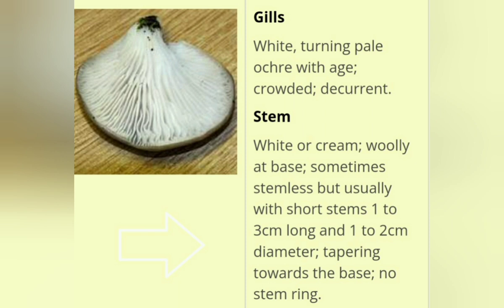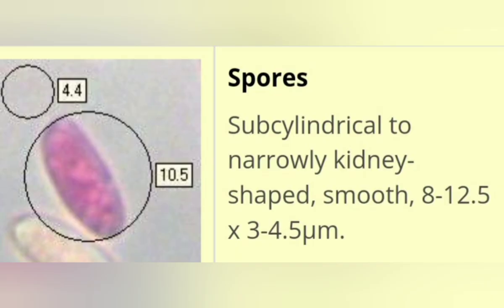The gills are white, turning pale ochre with age. They remain crowded and decurrent. The stem is white or cream, woolly at the base, sometimes stemless but usually with short stems one to three centimeters long and one to two centimeters in diameter, tapering towards the base, with no stem ring. The spores are sub-cylindrical to narrow kidney-shaped, smooth, measuring 8–12.5 × 3–4.5 micrometers.